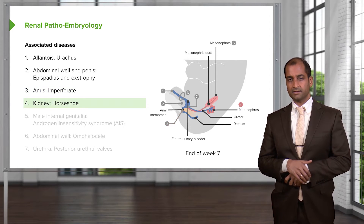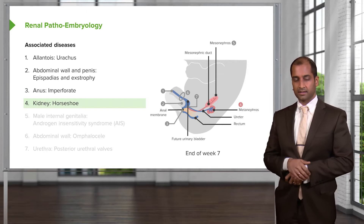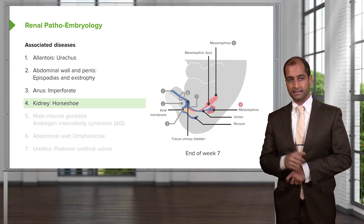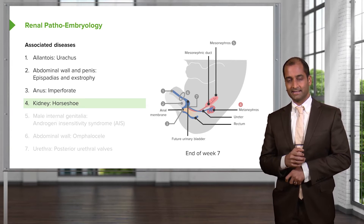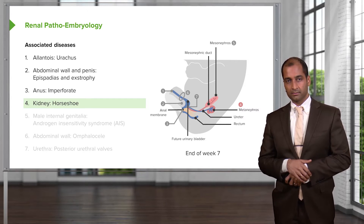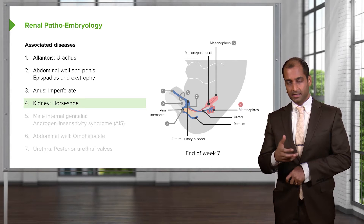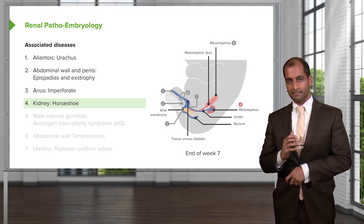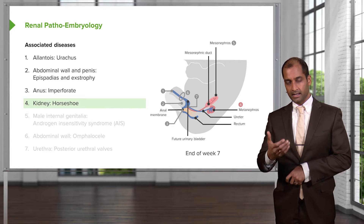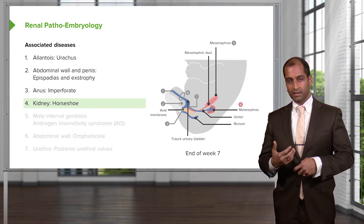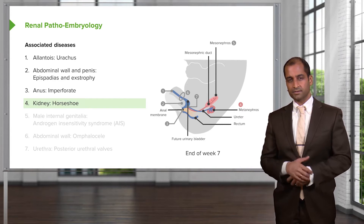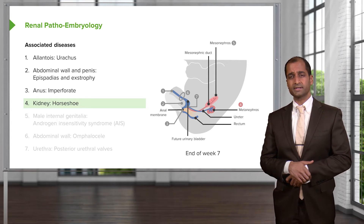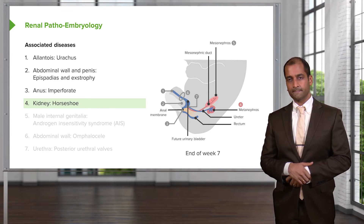Now, the kidney. The metanephros means that it is the permanent kidney, whereas the mesonephros would be more or less the interim. On the subsequent slide, I'll show you a picture of where the inferior poles of your kidneys fuse together — and it's actually more common than one would think. This renders the patient susceptible to kidney stones, and the fact that it may get trapped underneath the inferior mesenteric artery.